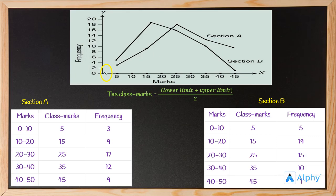According to the frequencies for each table, we have plotted the class marks on the graph. For section A, for the class mark of 5, there are 3 students who scored marks in the range 0 to 10, while in section B there are 5 such students. Similarly, for all other class marks and frequencies, we have plotted the two frequency polygons on the same graph. This is how we plot a frequency polygon — it is very simple using the class marks method, which is less time-consuming and recommended for easily preparing frequency polygons.